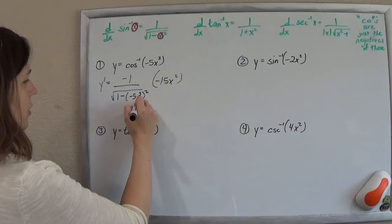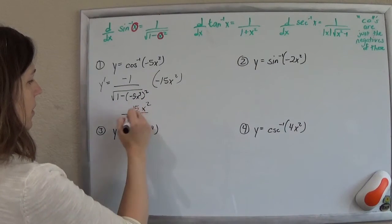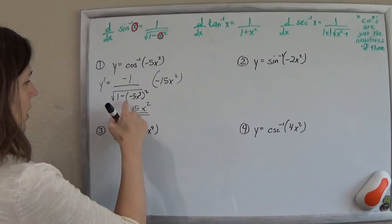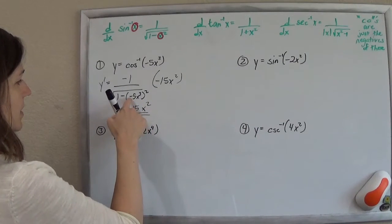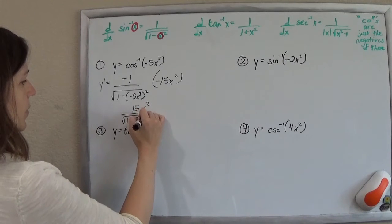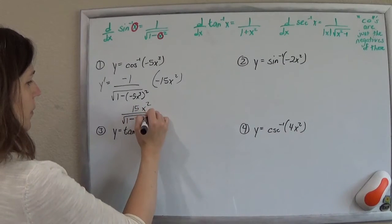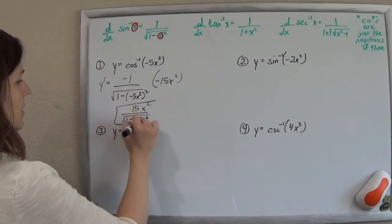And then just cleaning that up, that'll be just 15x squared over the square root of 1 minus, negative 5 squared is a positive 25, and then multiply those powers x to the sixth. So we get that.